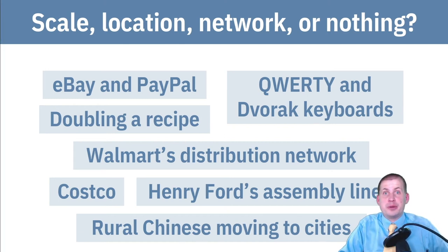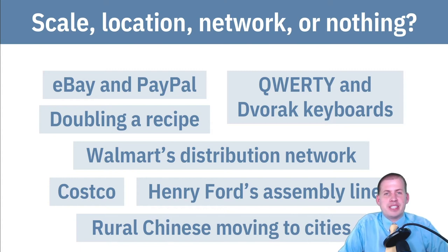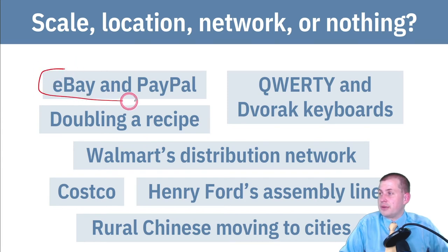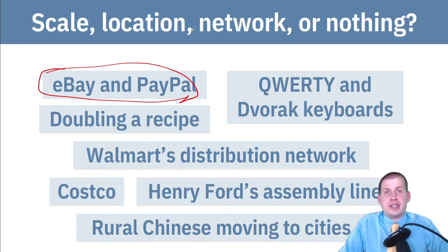Now that you're back — hopefully you actually paused it — let's talk about what these examples actually represent. eBay and PayPal: eBay came first back in the mid-90s as one of the early internet companies in the dot-com boom. They wanted to make it easy for people to pay for auction winnings on eBay, so they partnered with PayPal as the exclusive payment processor. As a result, there was a very tight network between eBay and PayPal, and it cost less for you to sell stuff on eBay because you could just use your existing PayPal account. This is a good example of network effects.